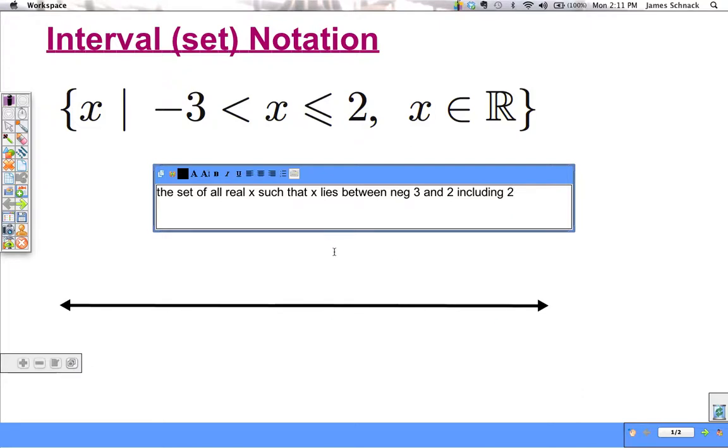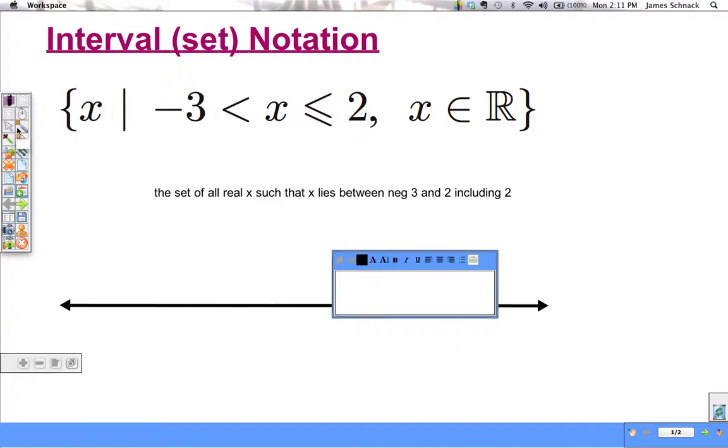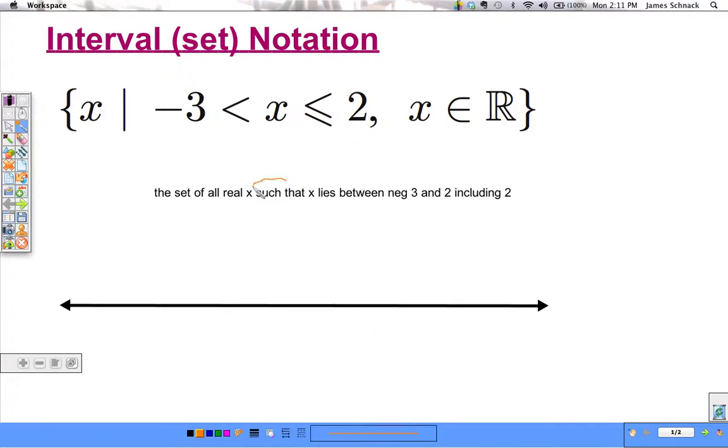Let's talk about where all that information comes from. 'Such that' is this vertical line right after the x. We know it's a set of all x because of the squiggly brackets. And we know x is real because at the end it says x is an element of the real numbers. You should remember that from the previous lesson.